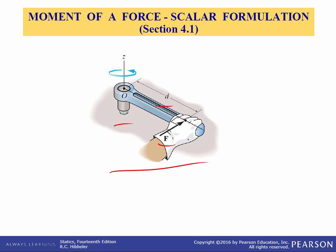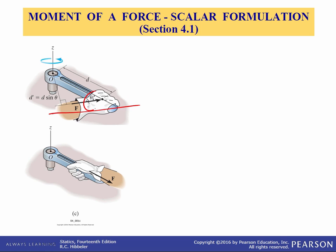If a force is applied to the handle of the wrench, it will tend to turn the bolt about point O. The magnitude of the moment is directly proportional to the magnitude of F and the perpendicular distance or moment arm D. The larger the force or the longer the moment arm, the greater the moment. If F is applied at some angle with respect to the wrench, it will be more difficult to turn the bolt since the moment arm is now D prime, and since sine of theta is always less than 1, the moment will be less than the force times D. If F is applied along the axis of the wrench, the moment will be zero since the line of action of F intersects point O, and no turning can occur.